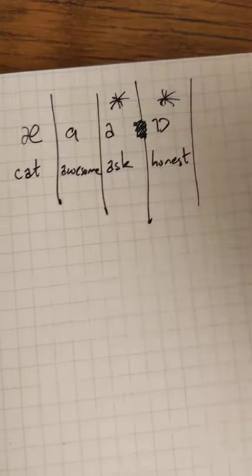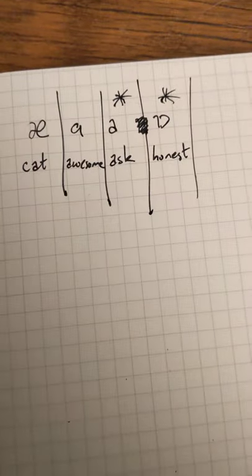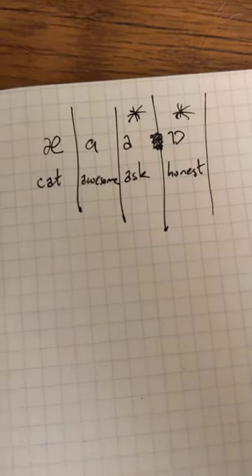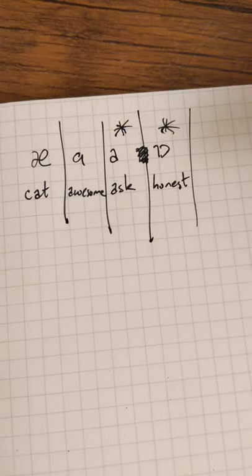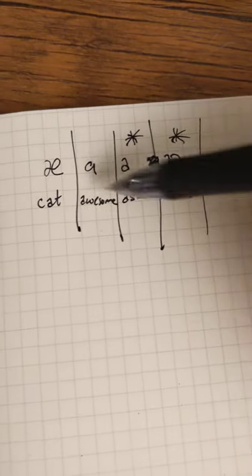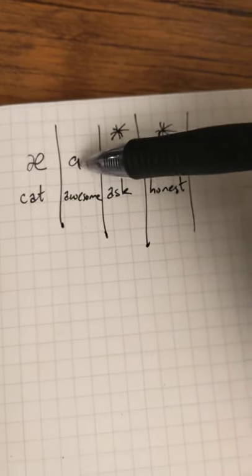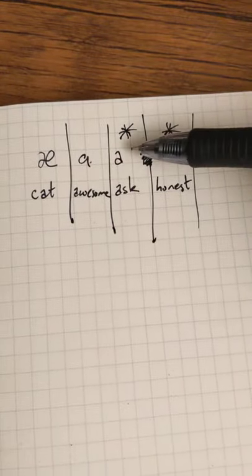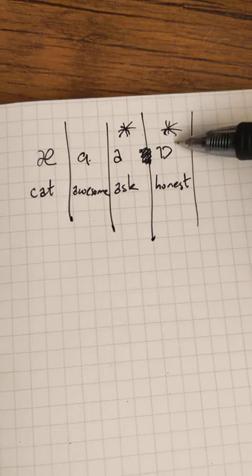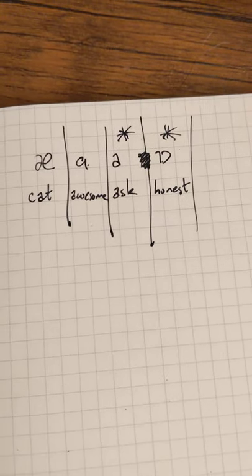I thought I would start the little IPA lesson with the A's. These two are the main two that you're going to pay attention to, and then these are sort of bonus, sort of dialect things.